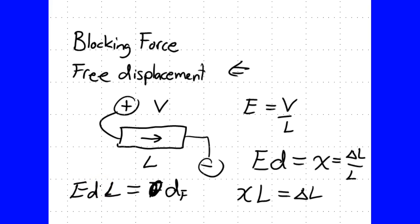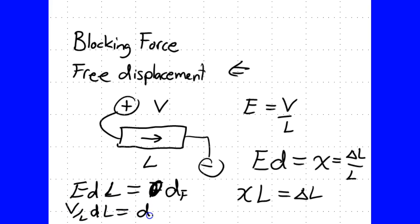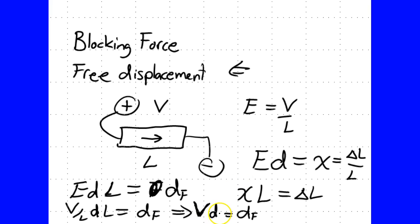Normally if we're looking at this as an actuator from a macroscopic perspective, we wouldn't use electric field directly, because when you're applying a voltage from a function generator or whatever voltage source, you're applying voltage — not electric field directly. So in your definition, you'd have V divided by L times D times L, which equals the free displacement DF. This simplifies to V times D equals DF. So for this piezoelectric material used as an actuator, the free displacement equals the voltage V times the piezoelectric D coefficient, namely the D33 coefficient.